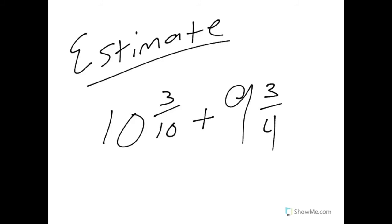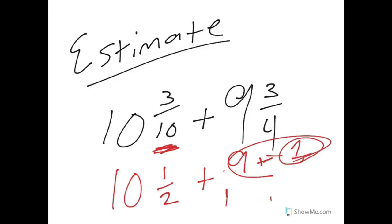Estimating two mixed numbers: 10 and 3/10 plus 9 and 3/4. 3/10 is pretty close, I would say, 1/2. 10 would obviously stay the same. Plus 9 and 3/4. Well, 3/4, here's the catch. I'm going to erase that because 3/4 is close to 1, and then if I have 9 as my whole number and 3/4 is close to 1, which is the whole number, I've got to combine those together. I end up with 10 and 1/2 plus 10, which is 10 and 1/2 and no fraction, just a whole number. 10 plus 10 is 20, my fraction remains 1/2.